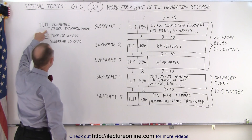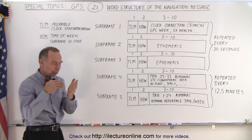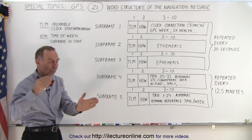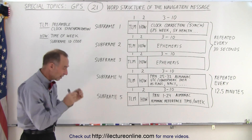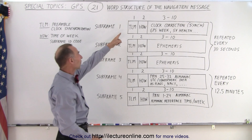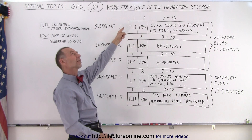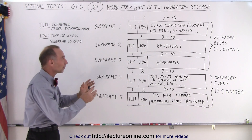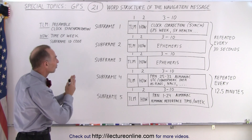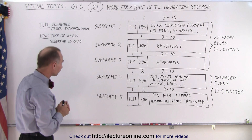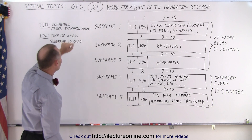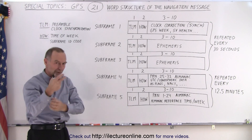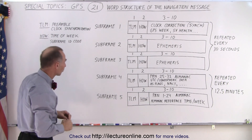The TLM contains the preamble so that we can sync in to the exact location and time of the message, because it has to be repeated every 30 seconds and we want to know that we're starting a certain message. So we have the same six or eight preamble bits — I'd have to look it up — that start off the message so we know it's the new sub-frame. It also has clock synchronization information so that we can sync up the clock of the satellite with the clock of the receiver, eliminating potential errors between them.